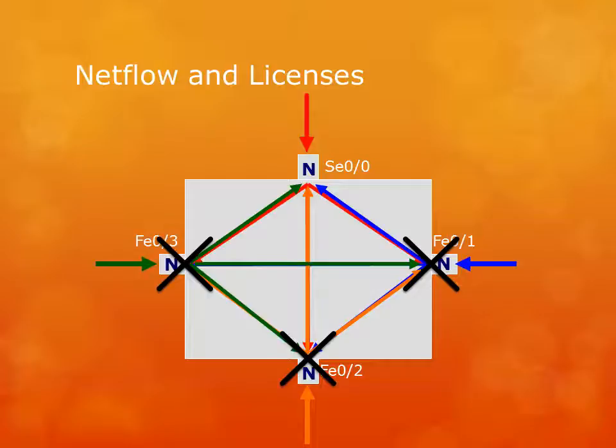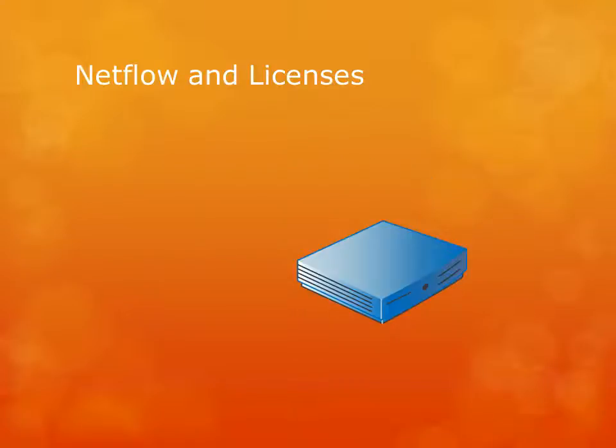There are some advanced configurations that change how you configure NetFlow, and luckily Reporter Analyzer has been configured to automatically adapt to those. One possible scenario is turning on both ingress and egress NetFlow just on the Serial 00 interface — this is great because you'll get a full picture just by turning it on for that one interface alone. Now we have four interfaces with NetFlow enabled and sending to our harvester.